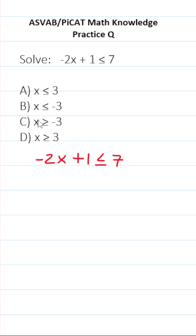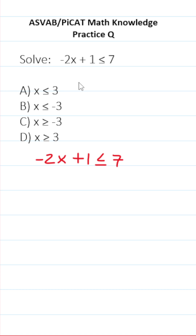Solve negative 2x plus 1 is less than or equal to 7. The key to solving inequalities is this: you solve it just like an equation, but if you multiply or divide across the inequality sign by a negative value, that's going to prompt you to change the direction of the sign.